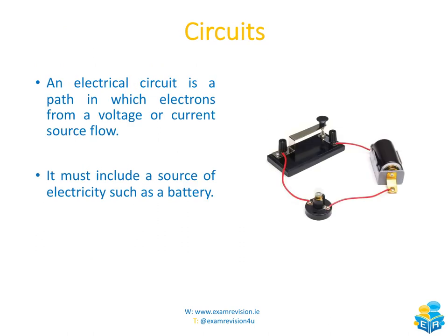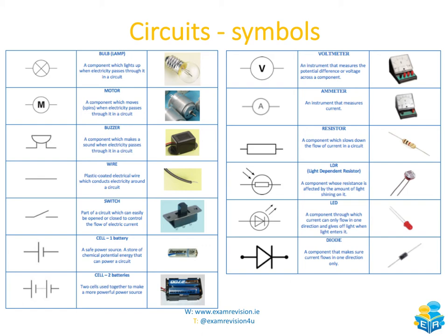An electrical circuit is a path in which electrons from a voltage or current source will flow. If you haven't already built circuits as part of your Junior Cycle Science course, you will before the end of third year, and a circuit might have looked exactly like this. When drawing circuits, we don't sketch in 3D — we draw simple line diagrams, and each piece of equipment has a specific symbol.